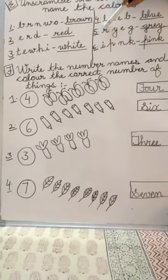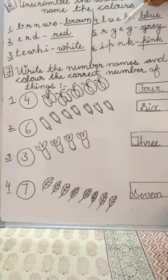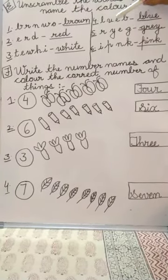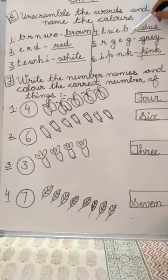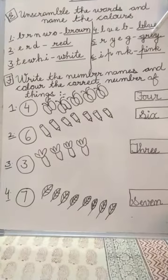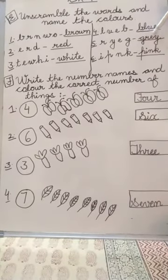Next is R, Y, E, and G. Four letters are given. So we can arrange to make the color name. That is G, R, E, Y. And we will write here grey.